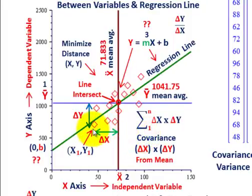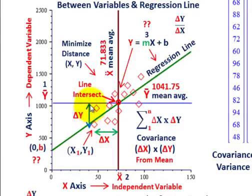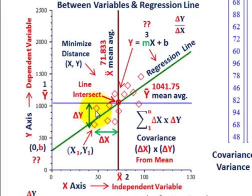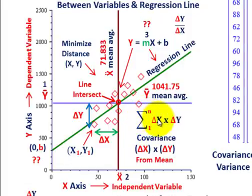When talking about covariance, you're looking at the change in y from the mean for each point — the distance from the y mean to its y value — and then the change in x from its mean value. You multiply those together, and that gives you the covariance: how much x and y vary together. For all points, you take the summation from 1 to n of the change in x times the change in y from their mean values.